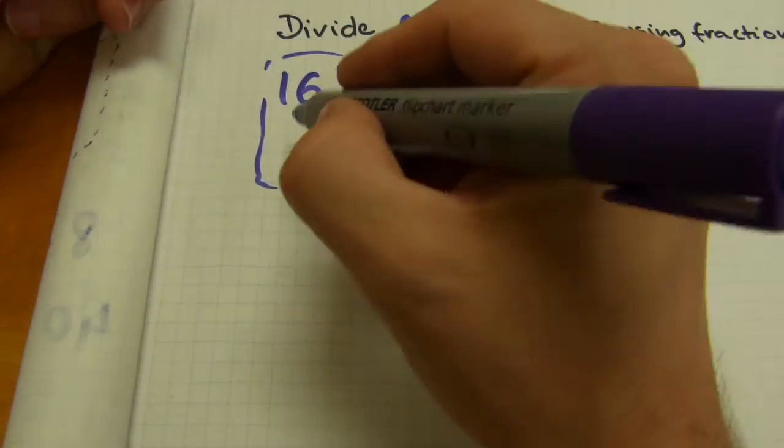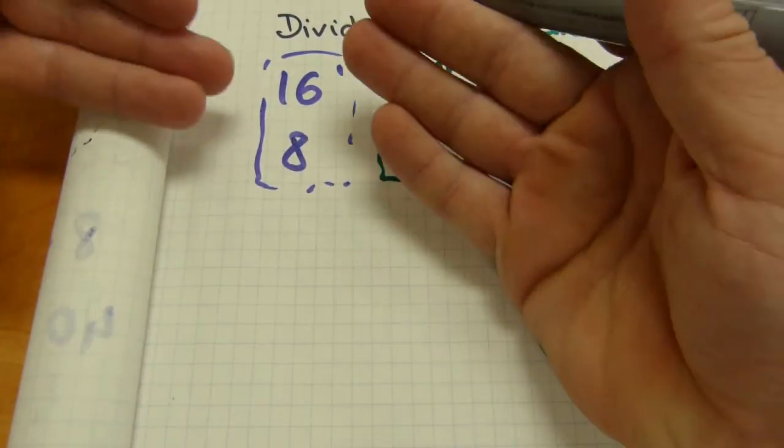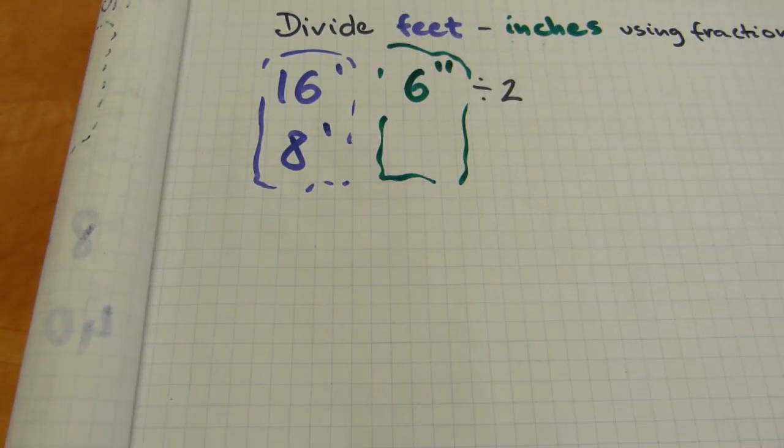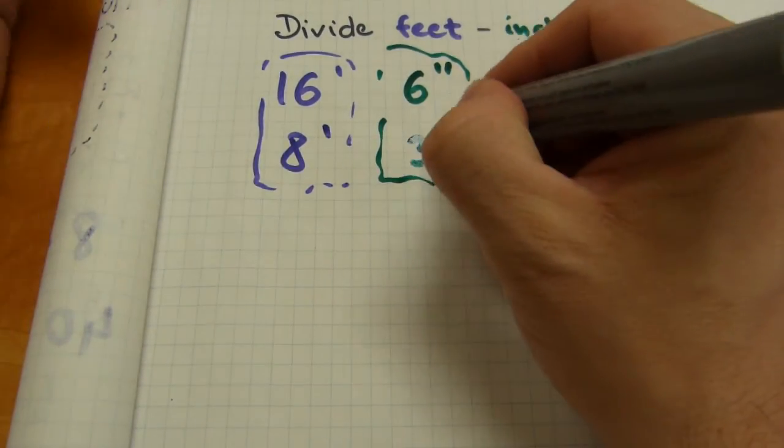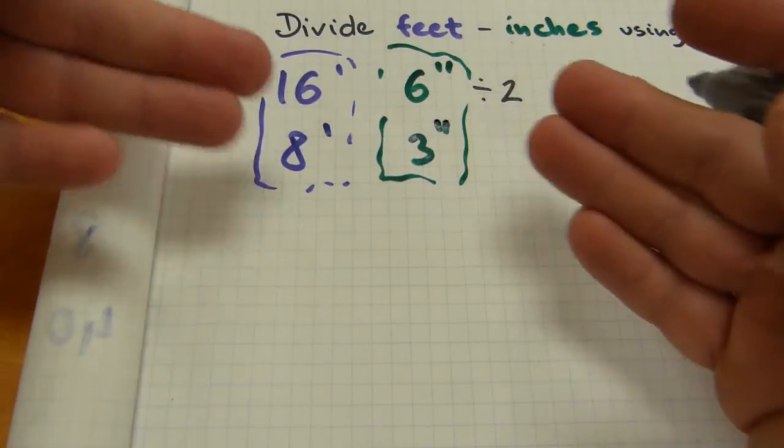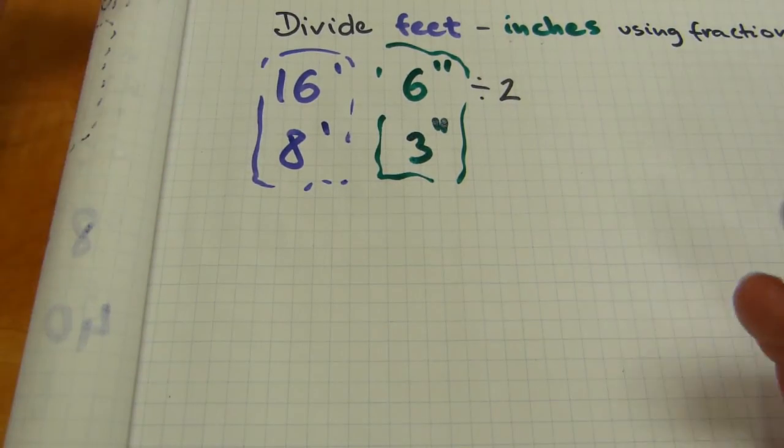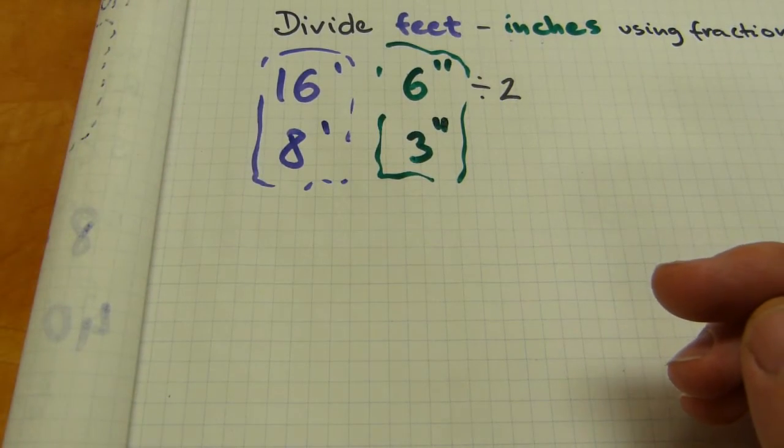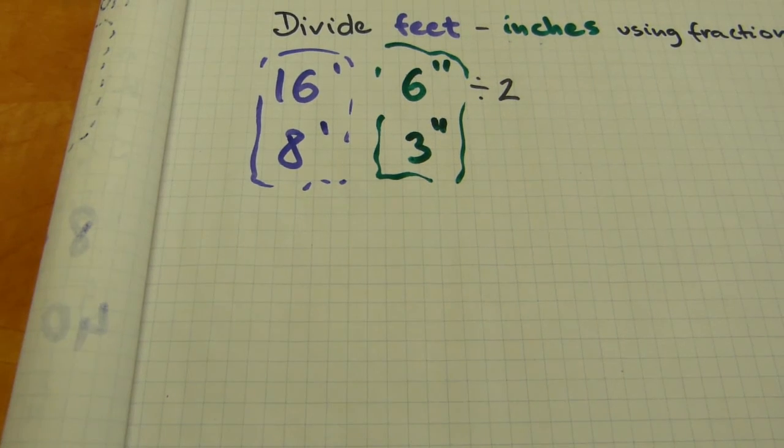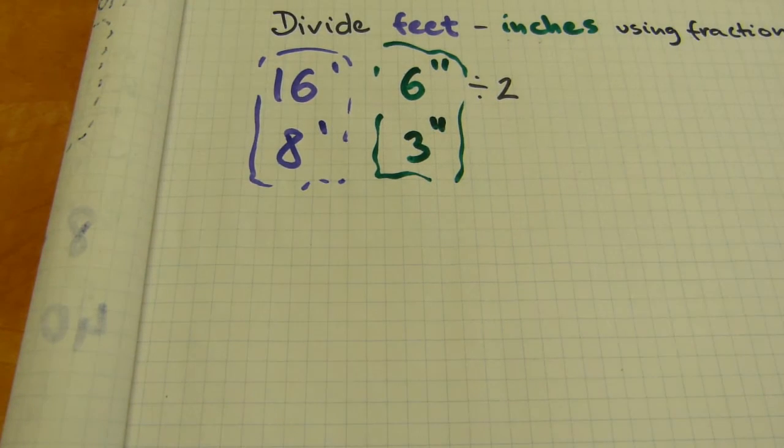16 feet 6 inches divided by 2. Well, 16 divided by 2 of course is 8 and gets written in the feet column, and 6 divided by 2 of course is 3 inches. So 8 feet 3 inches, there are no fractional remainders anywhere, so that's just the final answer.